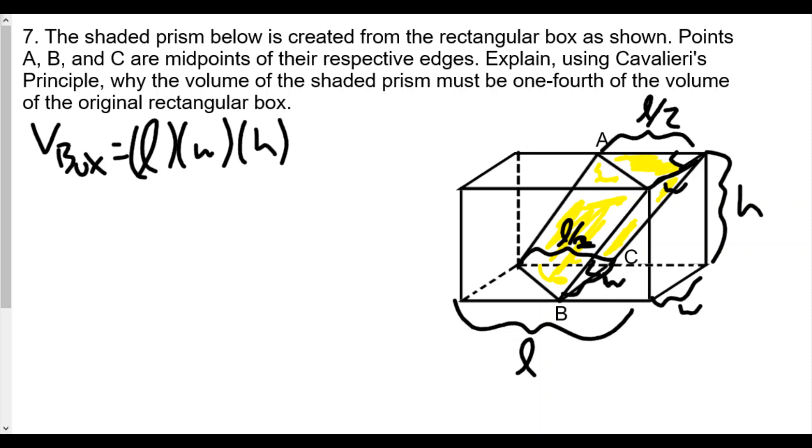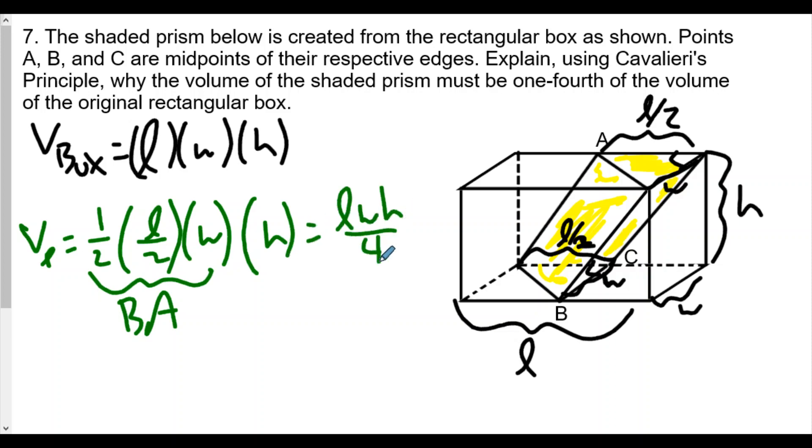Therefore, okay, so we said in this case our volume of our prism is going to be—let me just make a little space here. Because the base area is of the triangle, so we'll have in this case one-half L over 2 times the width. That's the base area. And the height is just the height. We're going to get length times width times height over 4. This is going to be one-fourth of the original volume here, because the original volume was length times width times height.